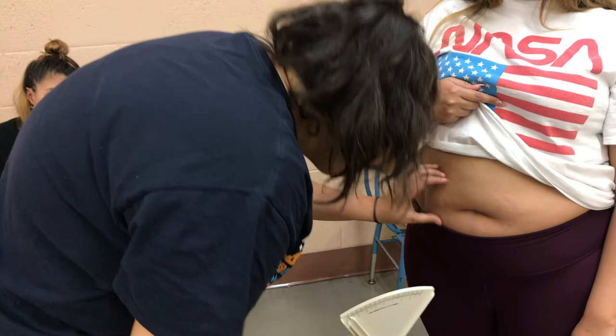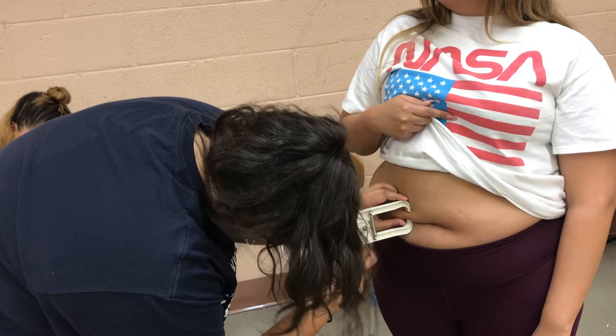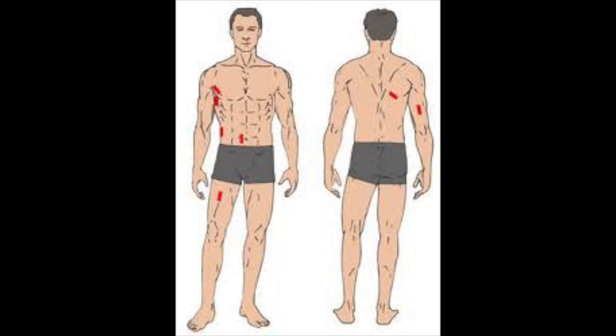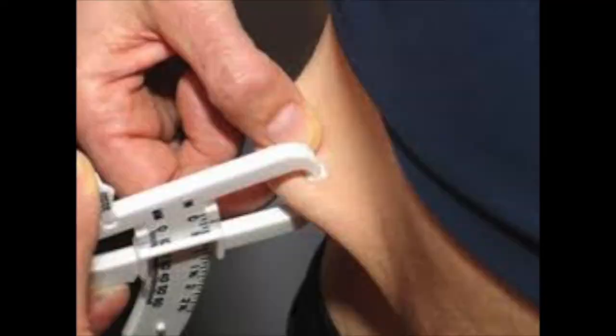Place calipers one centimeter away from the thumb and index finger, and measure halfway between the crest and the base of the fold. Take the reading within one to two seconds, but retest if measurements are not within one to two millimeters from each other. Take the measurements and then use the mean. Rotate between sites to avoid hurting the patient.